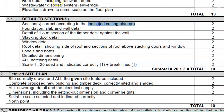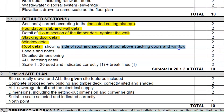Make sure your views are exactly as specified. You have to have your foundation, your slab, and your wall detail, which you all know by now. Then a detail of at least one-and-a-half meter section of that timber deck against the wall — that's an important one. You also have to include your stacking door detail, your window detail, and of course the lintels, door frames, etc.